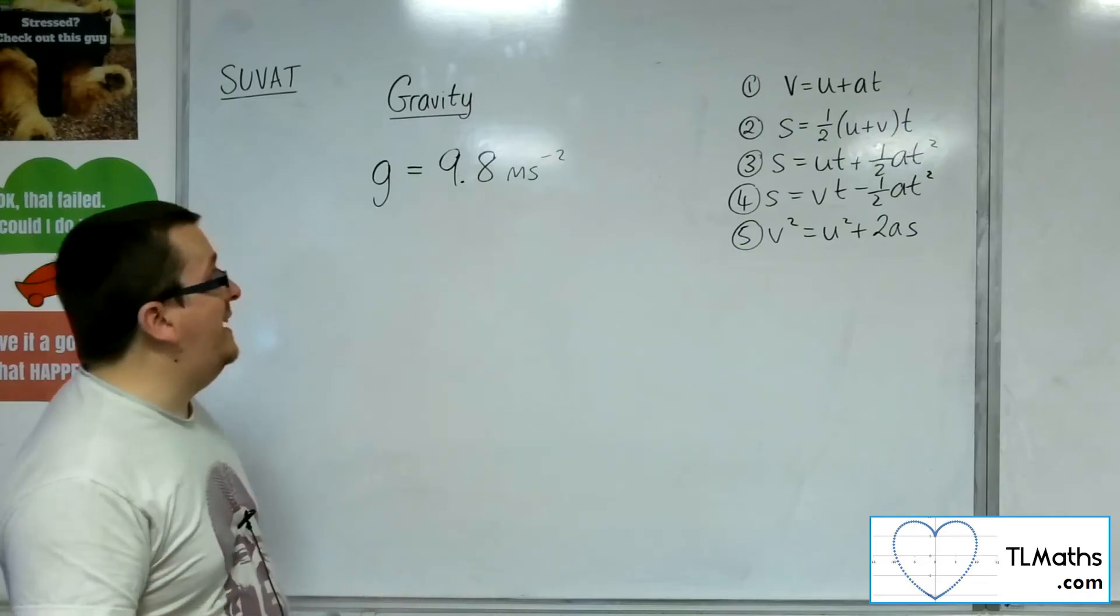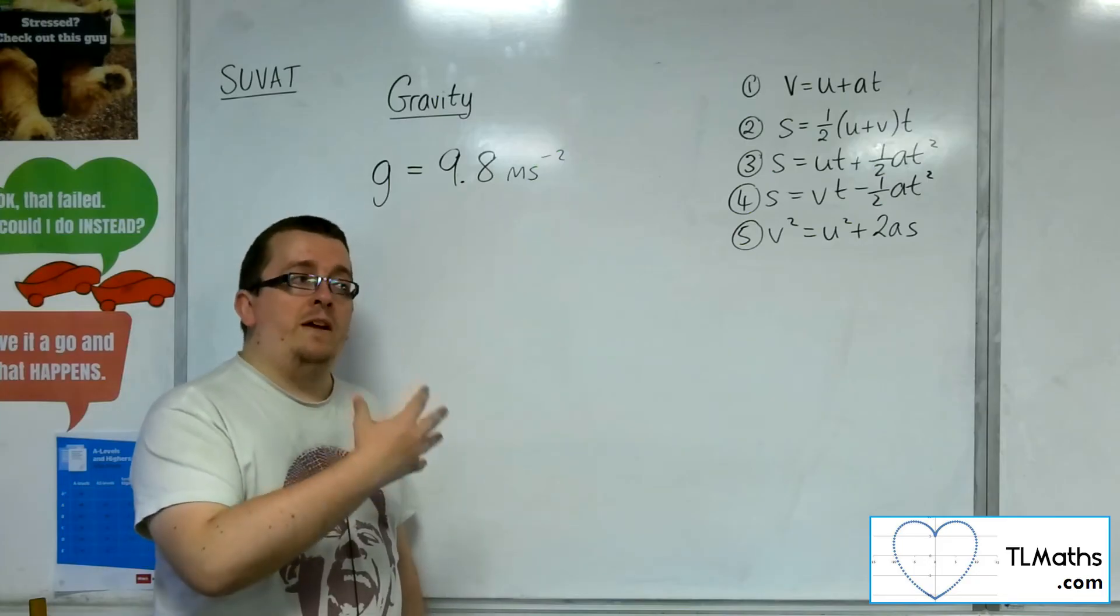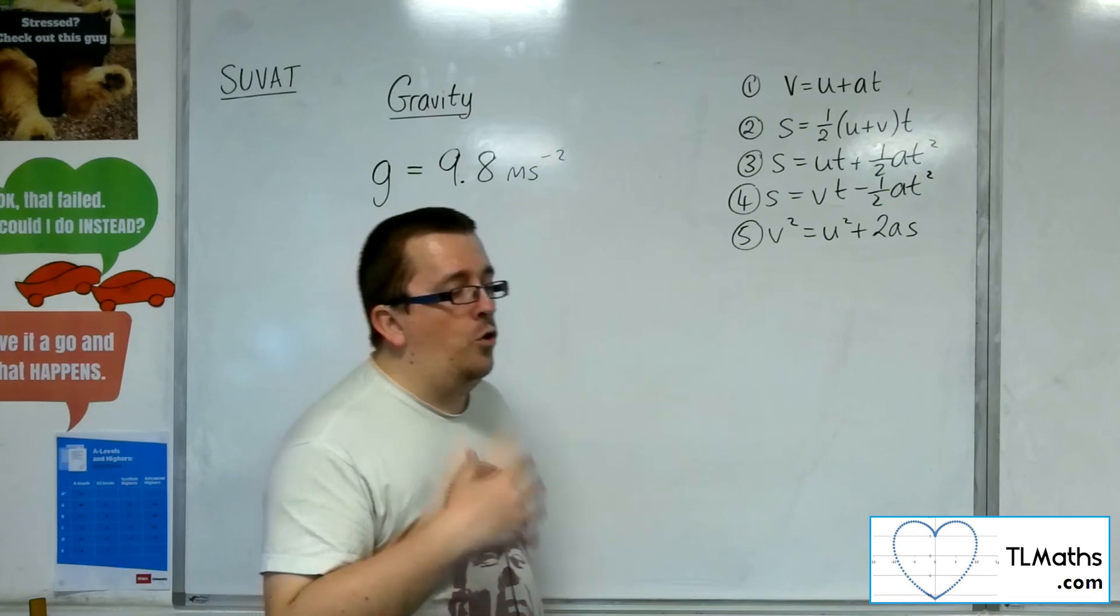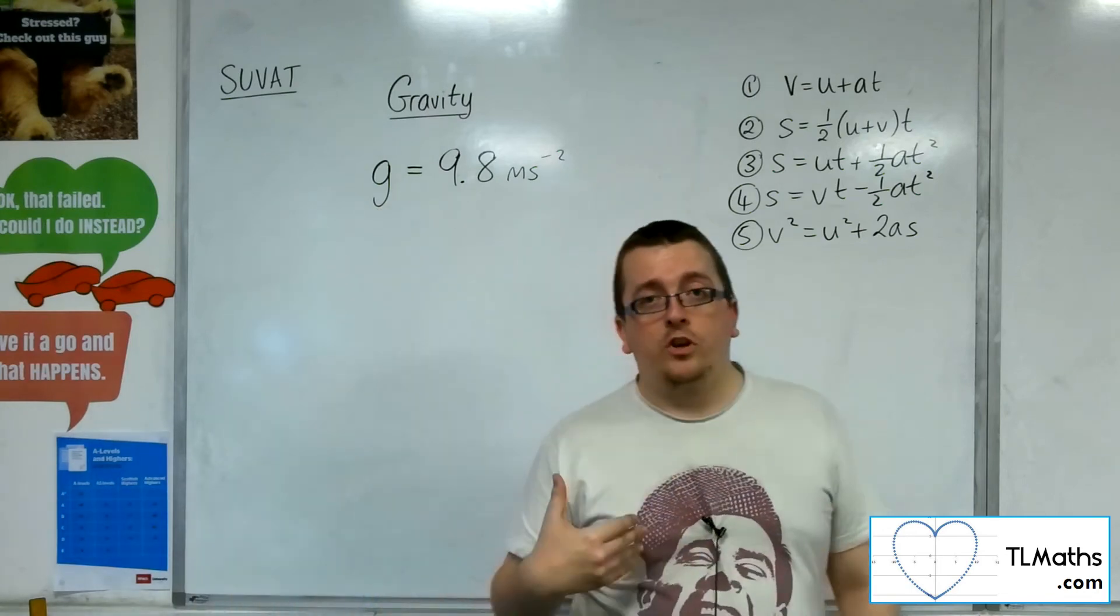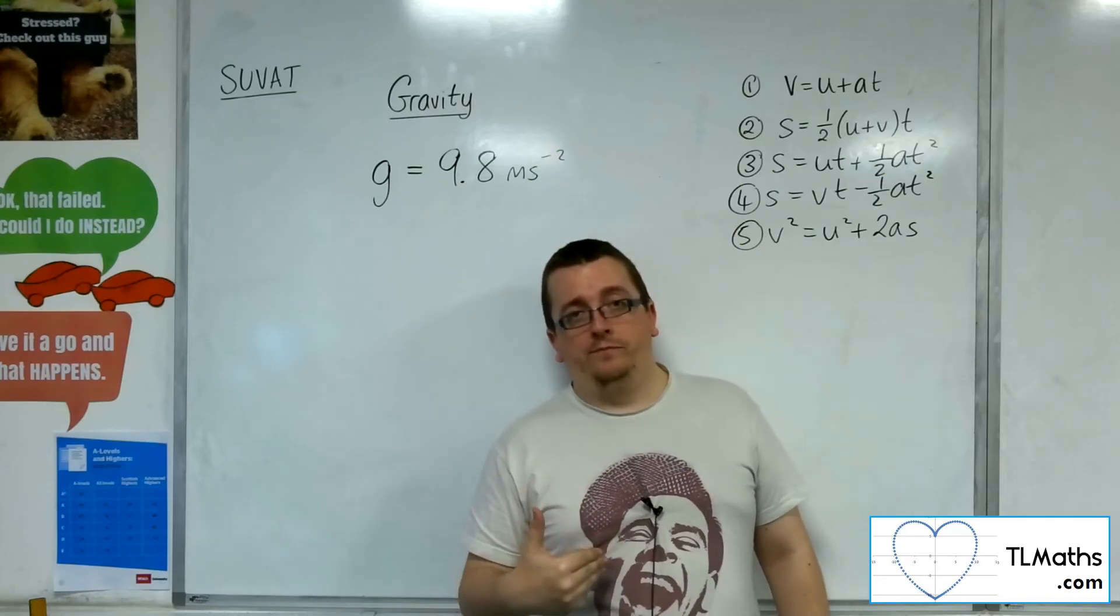Now, if gravity is set at 9.8, then this is a figure that has been rounded to two significant figures, which means that your answer in your calculation should be rounded to two significant figures also.